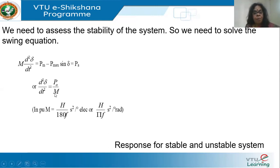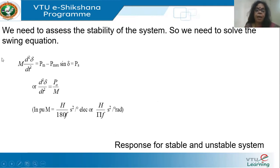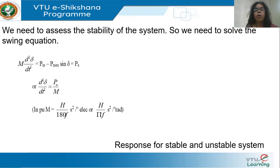In this session I will discuss the step-by-step method for solving the swing equation. M can be expressed in terms of the moment of inertia H, given in mega-joules per MVA, in units of second-squared per electrical degree or radian. Solving the swing equation means finding δ as a function of time — how the rotor angle changes from its initial value at t=0 as time progresses.